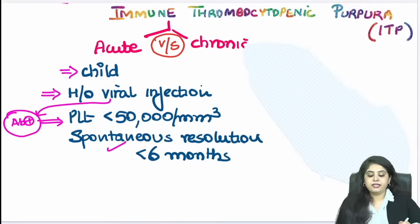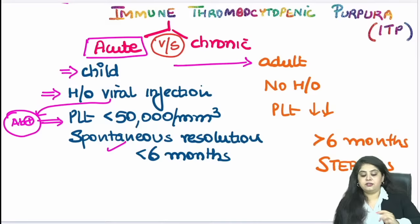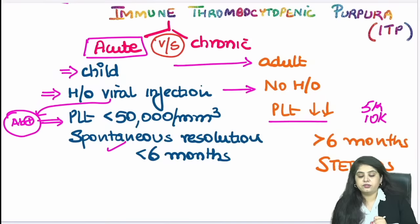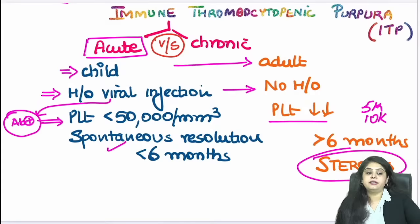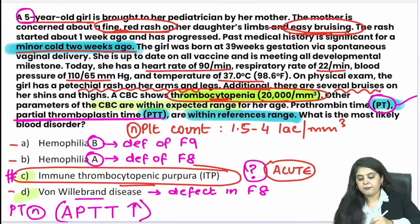Chronic ITP: everything is opposite. Occurs in adults. No viral history. Platelet count is very low — 5,000 or 10,000. You cannot sit and wait; you must give steroids. So: this child with a minor cold — acute ITP — fits perfectly. I hope that is clear for everyone. This question is also settled. We will take up the last question, which is the easiest — a confidence booster PYQ that everyone will answer.